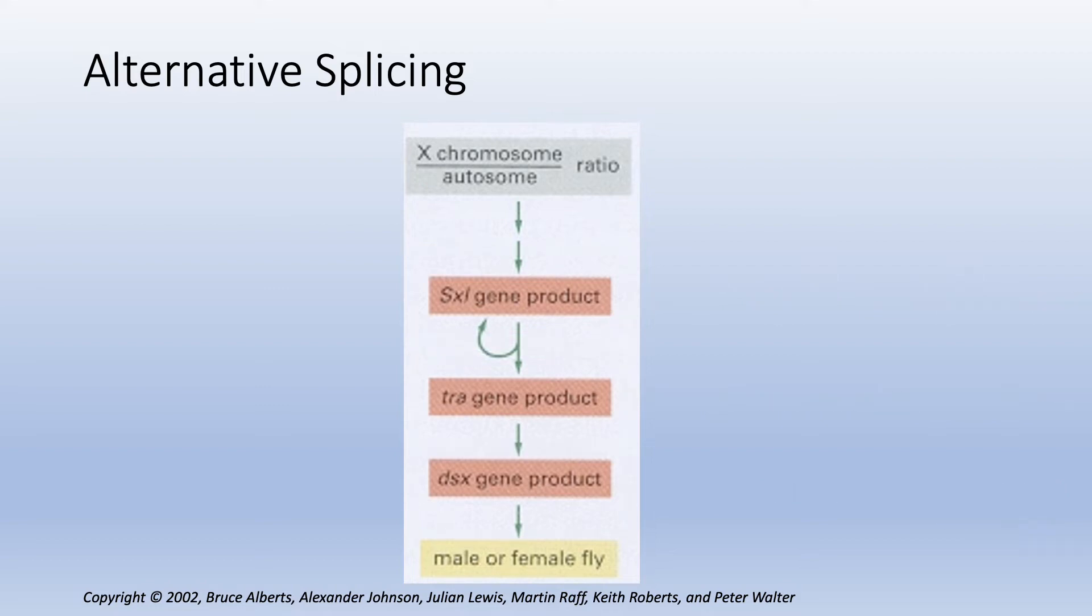The first step in the pathway includes reading the X chromosome to autosome ratio, which determines the cascade of gene products in the following phases. These gene products transmit information about the ratio to the other genes that are involved in phenotypes relating either to the male or the female sex.